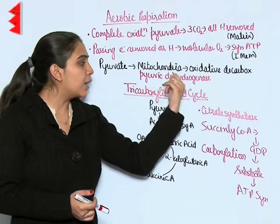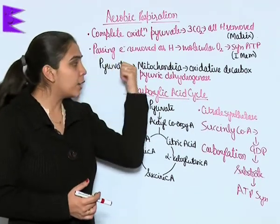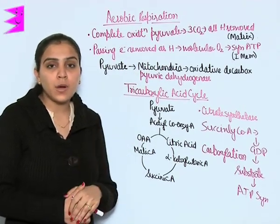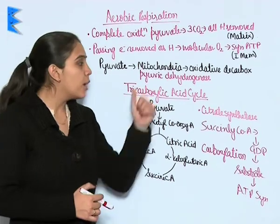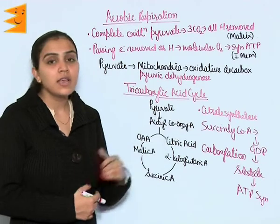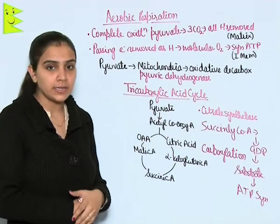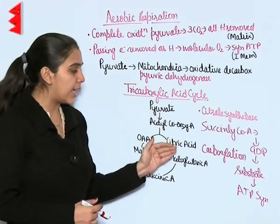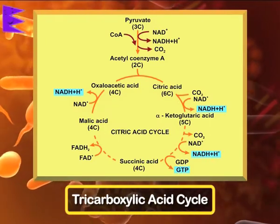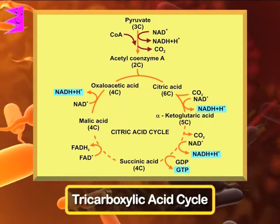When pyruvate enters the mitochondria, it undergoes oxidative decarboxylation with the help of the enzyme pyruvic dehydrogenase. You can see in the equation that pyruvate is entering the mitochondria and its oxidative decarboxylation is taking place with the help of pyruvic dehydrogenase and certain coenzymes. Now let us understand the tricarboxylic acid cycle through the diagram — pyruvate gets converted into acetyl coenzyme A.